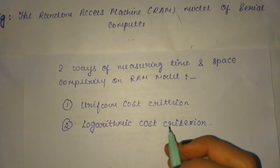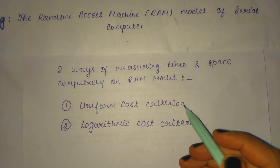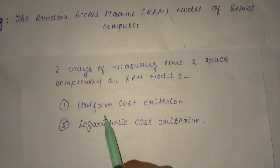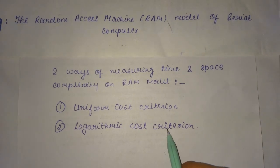We have two ways of measuring time and space complexity on RAM model. What are they? They are uniform cost criteria and logarithmic cost criteria.